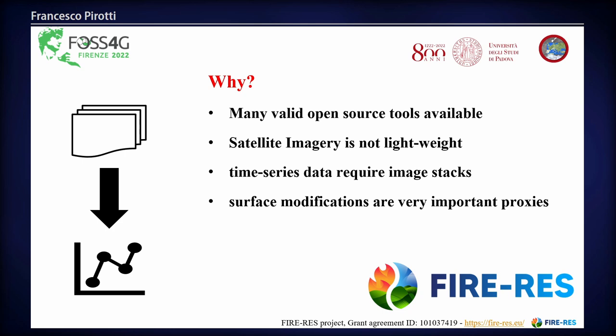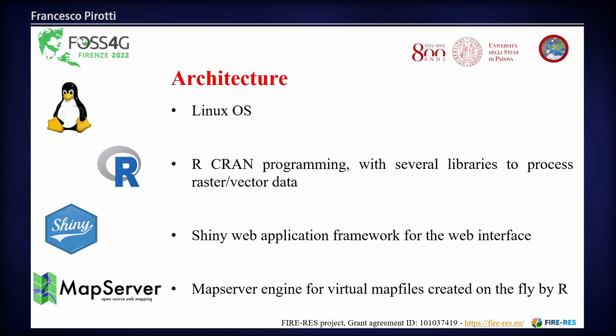Surface modifications are also proxies for climate change and other things. If we see the dynamics in Earth surface modifications, we can also predict what could happen in the future and take action. There are already a lot of solutions that contemplate the use of remote servers — there is Google Earth Engine, and other tools that access data directly online. But we also wanted to create an architecture for PhD and master students to get acquainted with the typical workflow in satellite image analysis.